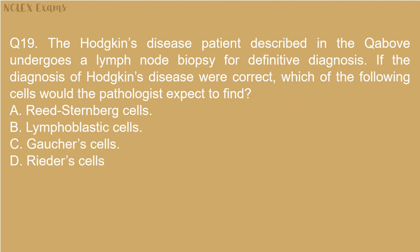Question 19: The Hodgkin's disease patient described in the question above undergoes a lymph node biopsy for definitive diagnosis. If the diagnosis of Hodgkin's disease were correct, which of the following cells would the pathologist expect to find? A. Reed-Sternberg cells. B. Lymphoblastic cells. C. Gaucher cells. D. Auer rod cells.